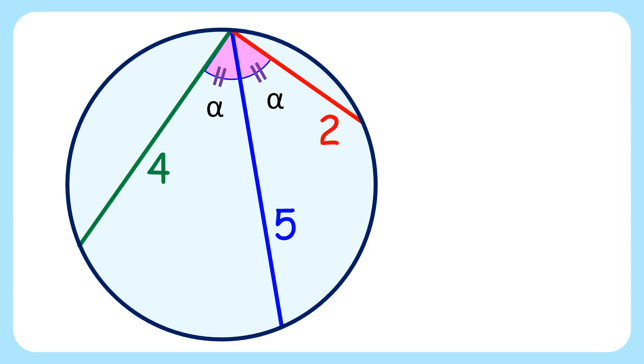In today's interesting question, given is a circle with three chords starting from the same point. The length of the chords is given as 4 centimeters, 5 centimeters, and 2 centimeters. The angles suspended between the chords are equal. Using this data, we have to find the radius of the circle.